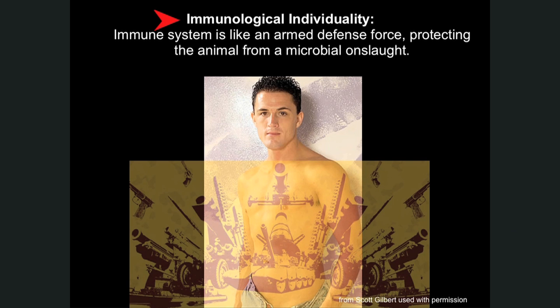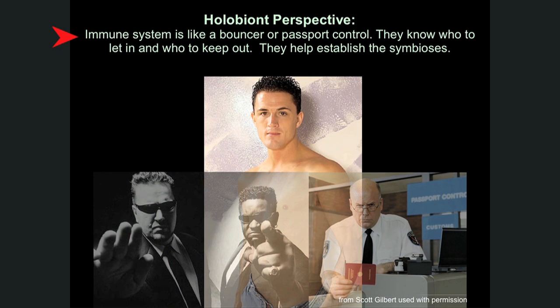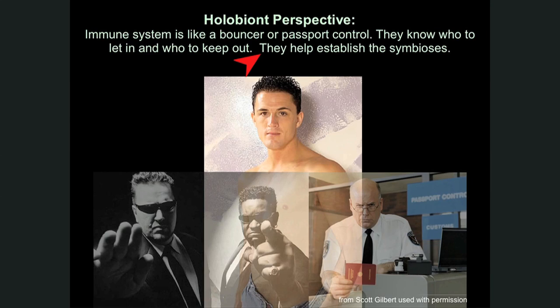So how about immune individuality? We think of our immune system as defending us. But in reality, the holobiont perspective is that your immune system is really much more like passport control or a bouncer. It knows who to let in and who not to let in. And the interesting thing about the immune system is that, unlike the old idea of defense, it actually helps establish microbiota in your body.